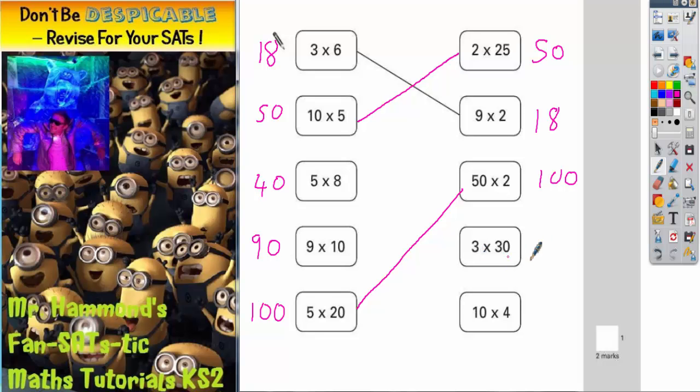3 times 30 is 90. So the two 90s have got to match. So that's those two. And 10 times 4 is 40. Well there's only one left. It's got to be the two 40s.